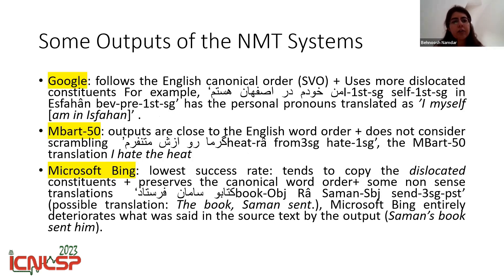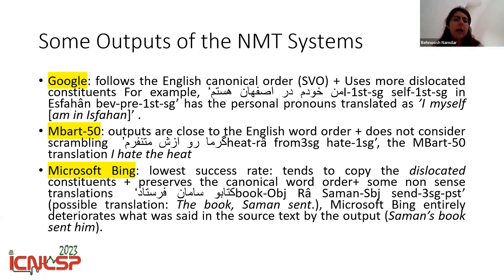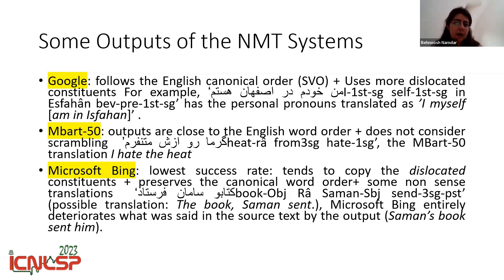The most interesting part of the research is the results. Regarding Google Translate, it tries to follow the English canonical word order SVO, and it uses more dislocated constituents in the translations. For example, in this sentence, Google goes through each word and tries to translate word by word — rendering 'I myself' in SVO order.